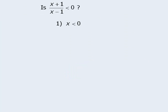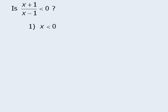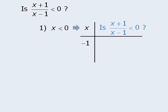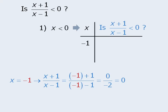Here's another question. We want to determine whether (x + 1)/(x − 1) is less than 0. Statement 1 tells us that x is less than 0. If you're not sure where to begin, try the table method. We'll choose values for x such that x is less than 0, then ask: is (x + 1)/(x − 1) less than 0? Keep in mind x must be less than 0, so we cannot plug in 0, 1, or 10. If x equals negative 1, then the expression evaluates to 0, so the answer to the target question is no — (x + 1)/(x − 1) is not less than 0.